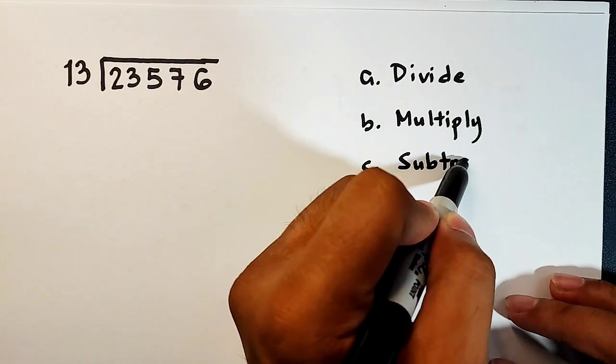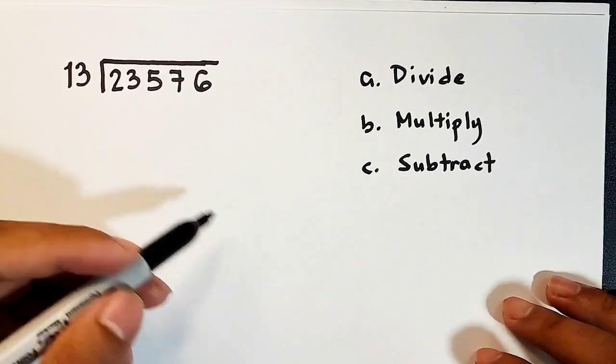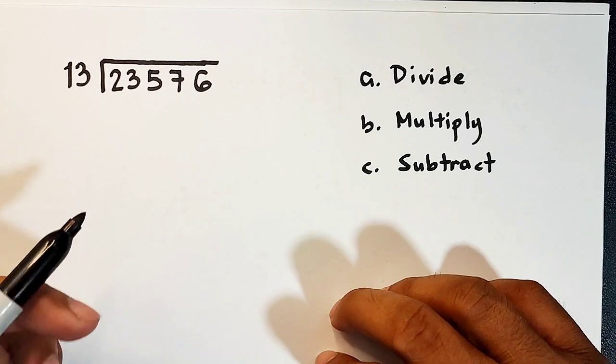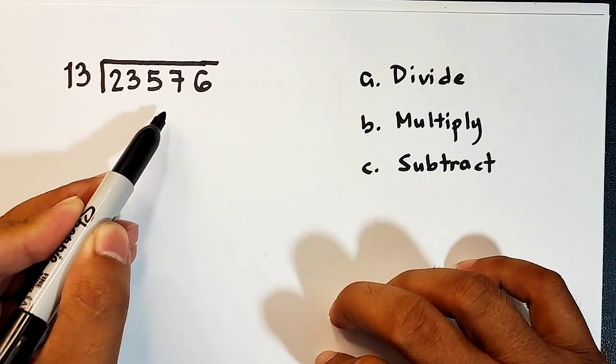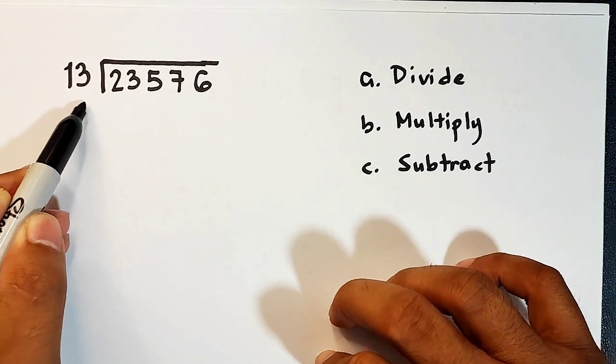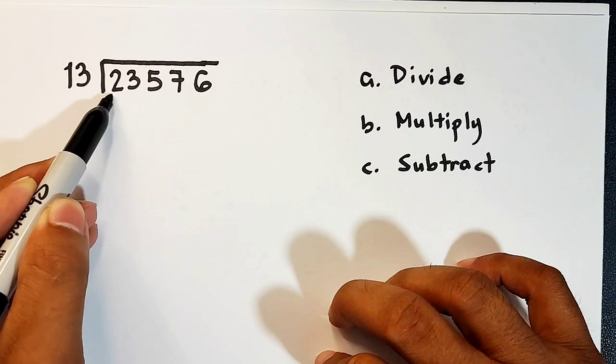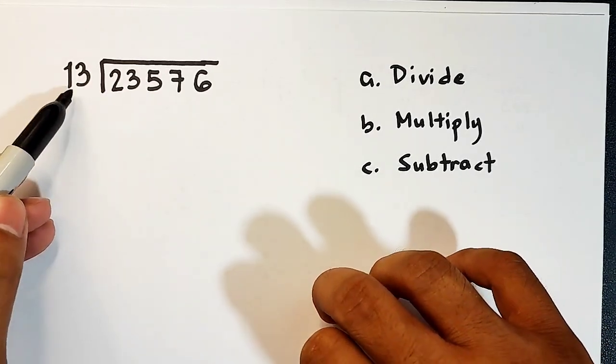These are the three operations that we will use with repetition in dividing numbers. So let's have this one: 23,576 divided by 13. So first, we will divide the first digit, 2, by 13.